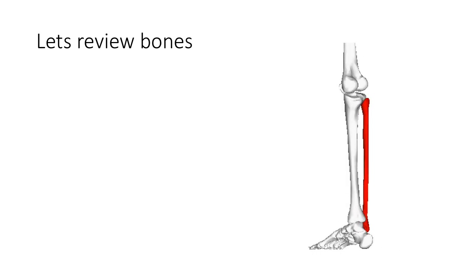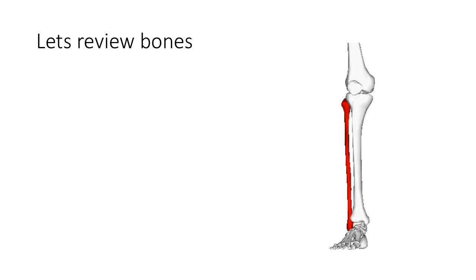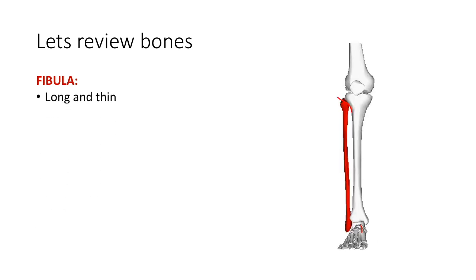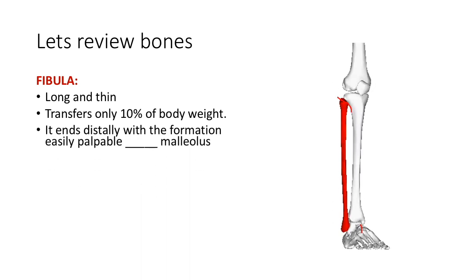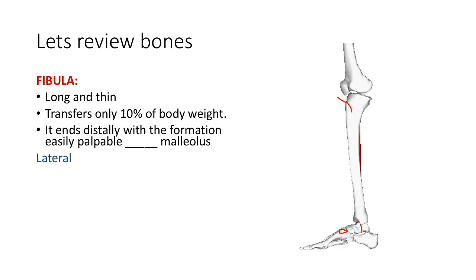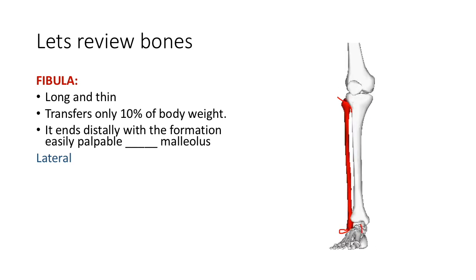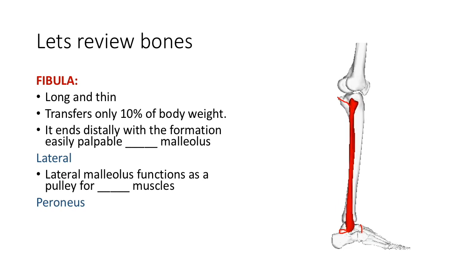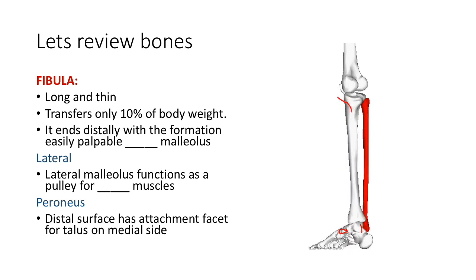Now let's review the bones one by one to understand the joints and later discuss osteokinematics. The first bone is the fibula. It is thinner than the tibia — a long and thin bone. It transfers only 10% of the body weight. It ends distally with the formation of the lateral malleolus, which is the projection on the lateral side of the foot. The lateral malleolus functions as a pulley for muscles, especially the peroneus muscle, and its distal surface has a facet for the talus on the medial side as well as for the tibia.